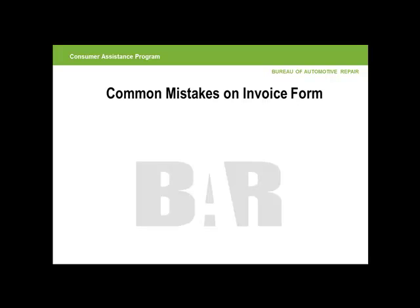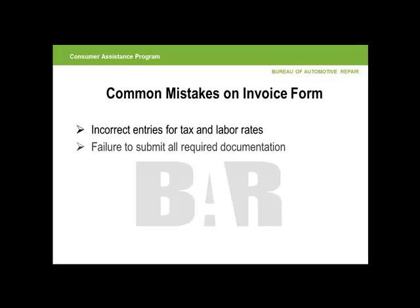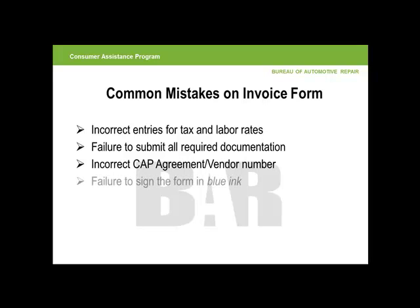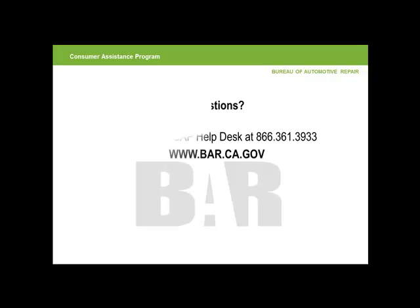Some of the common mistakes on the invoice form: incorrect entries for tax and labor rates — be sure they match what is on file with the CAP program; failure to submit all required documentation — the invoice package must contain the required documents outlined in Section 6.4; incorrect CAP agreement and vendor number — this can be found on your CAP standard agreement; and failure to sign the form in blue ink. Forms will be returned to you for errors. This concludes our tutorial. If you have any questions, please contact the CAP Help Desk at 866-361-3933. Thank you.